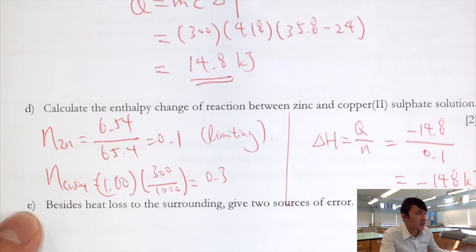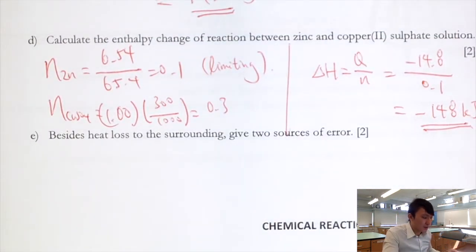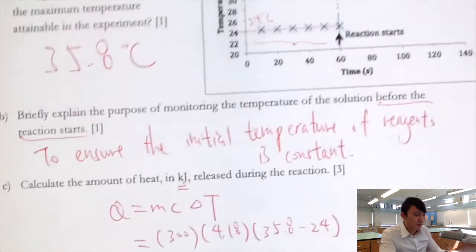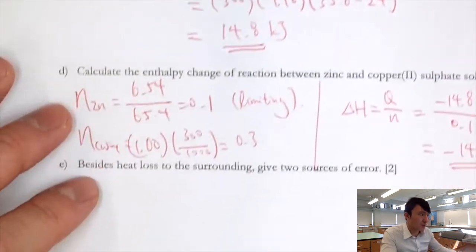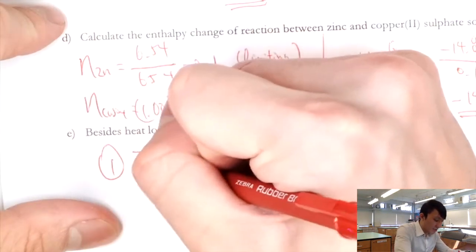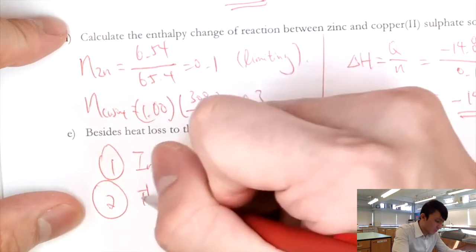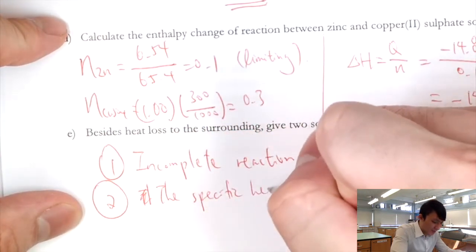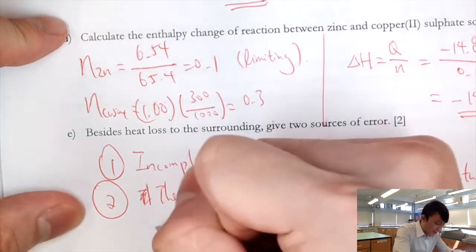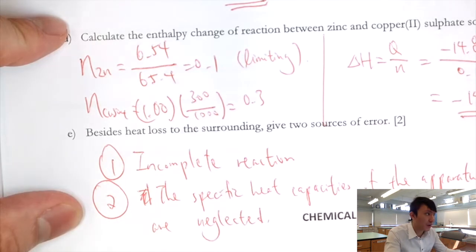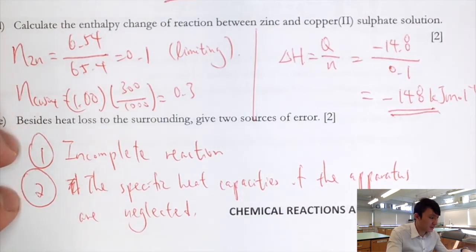For part E, besides heat loss to the surroundings — which has already been accounted for by the extrapolation — two other sources of error are: incomplete reaction under the given conditions, and neglecting the heat capacity of the apparatus.